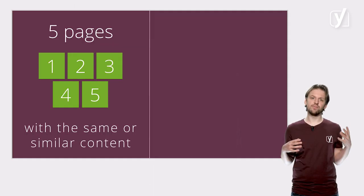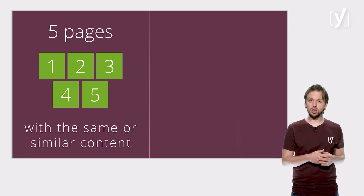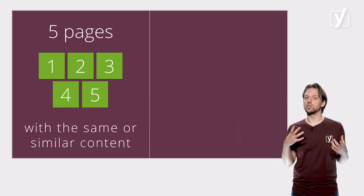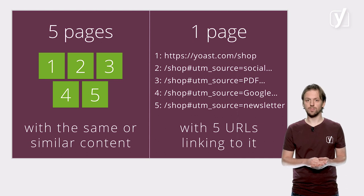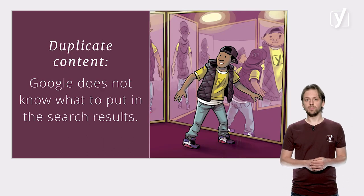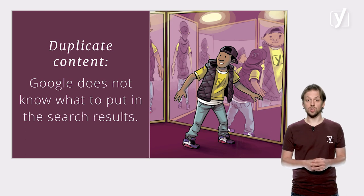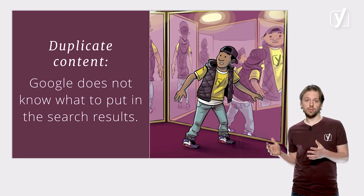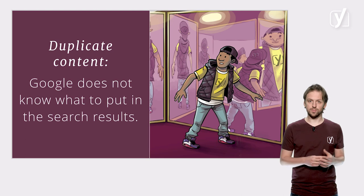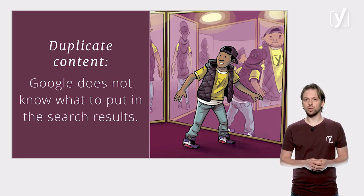Let's first explore what goal canonical links serve. Canonicals are quite difficult, so bear with me. Imagine you have five separate pages that are either identical to each other or closely resemble each other — which are twins or brothers and sisters, so to speak. Or you have one page with several URLs linking to it. This seems strange, but it's actually not that rare, as we'll see later in this video. In these cases, you have an SEO problem. Google won't know which of these pages is most important. Google will get confused because it wants to rank either the best results or the best URL, but there is no way to distinguish between the results. In SEO terms, this is called the duplicate content problem.